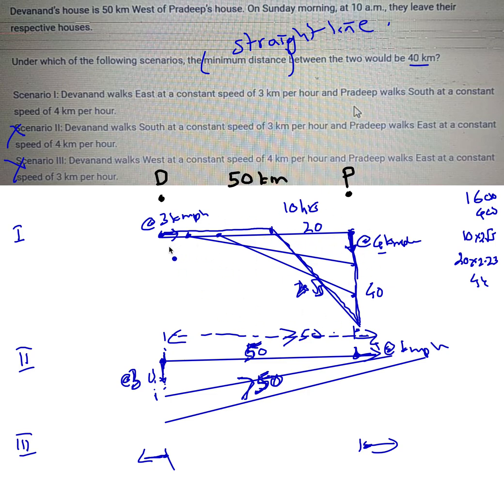Let's say after t hours, Devanand would have covered 3t and Pradeep would have covered 4t. Now I want this straight line distance between them. The horizontal distance is going to be 50 minus 3t, the vertical distance is 4t, so the oblique distance...